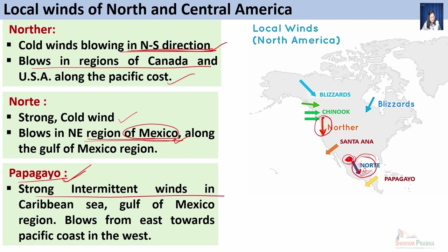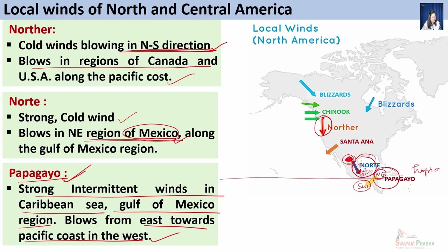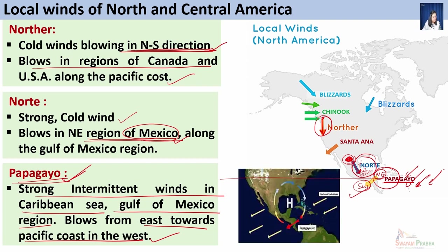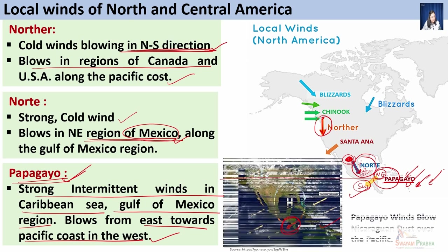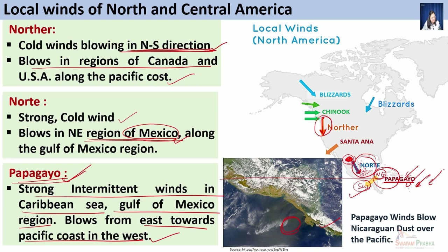Papagayo is a strong intermittent wind blowing in the Caribbean Sea region along the Gulf of Mexico, from northeast to southwest — that is, from the Caribbean Sea regions towards the Pacific. They primarily blow in the trade wind belt zone in the Central America and Mexico region. This satellite imagery clearly shows winds blowing from the Caribbean Sea region towards the Pacific, carrying large amounts of dust from continental areas.